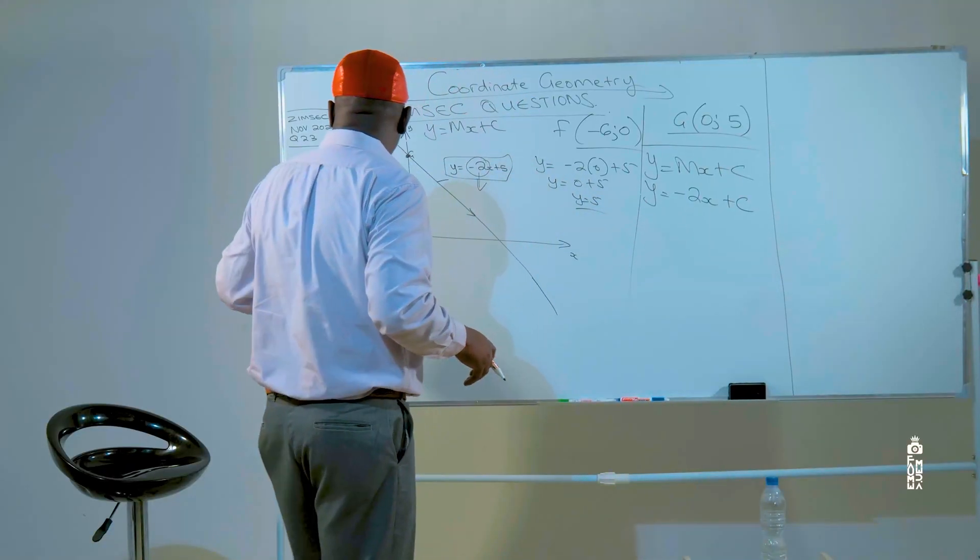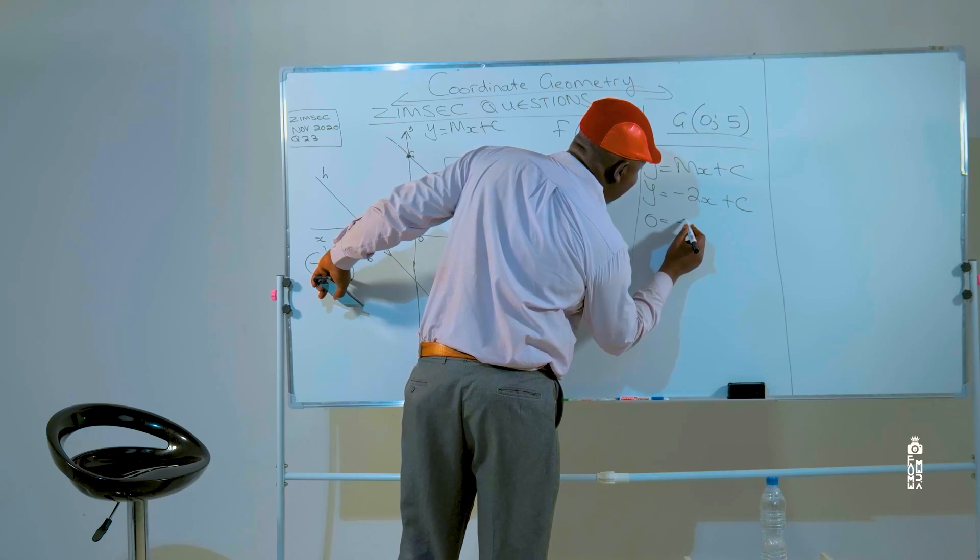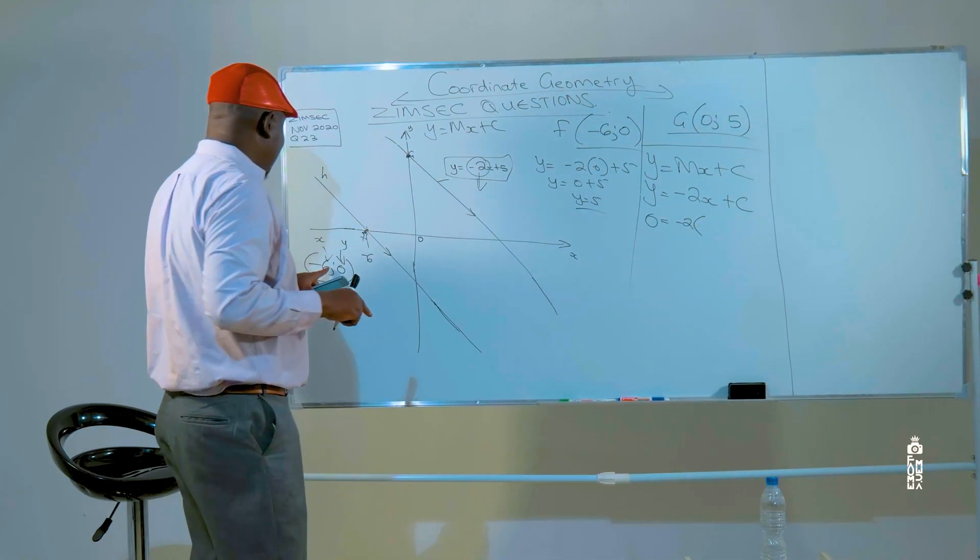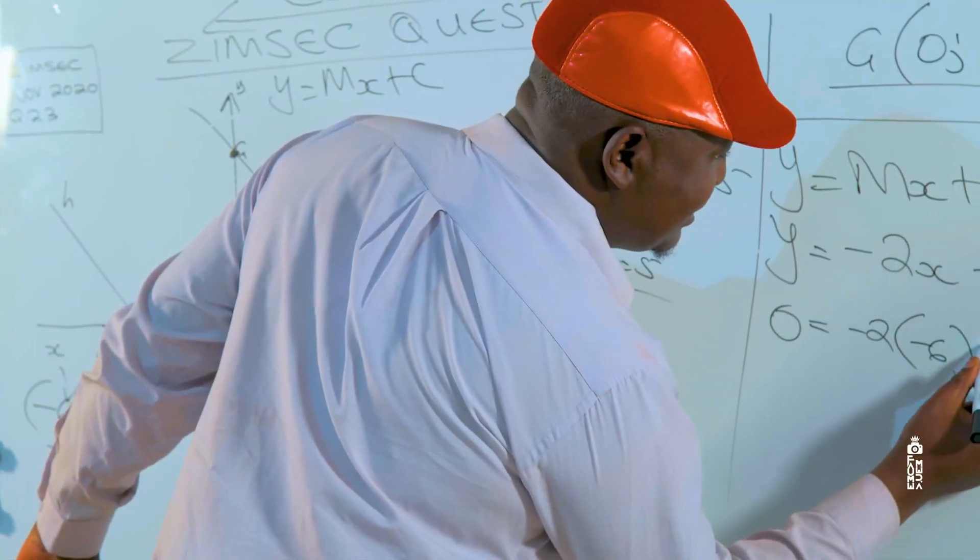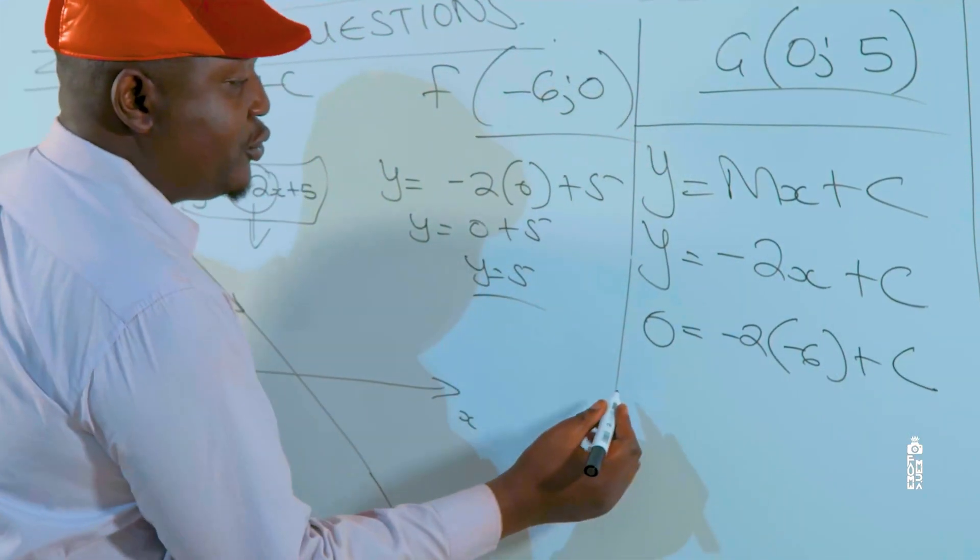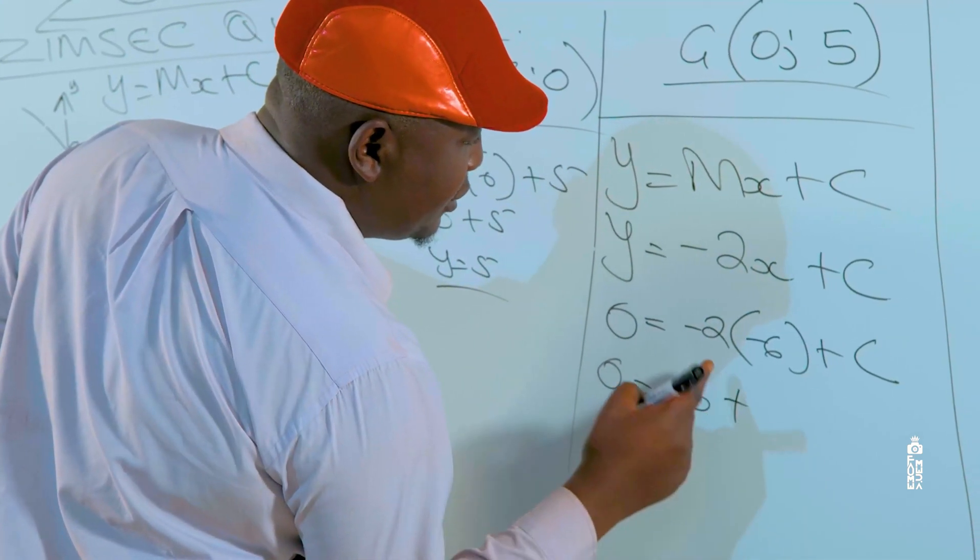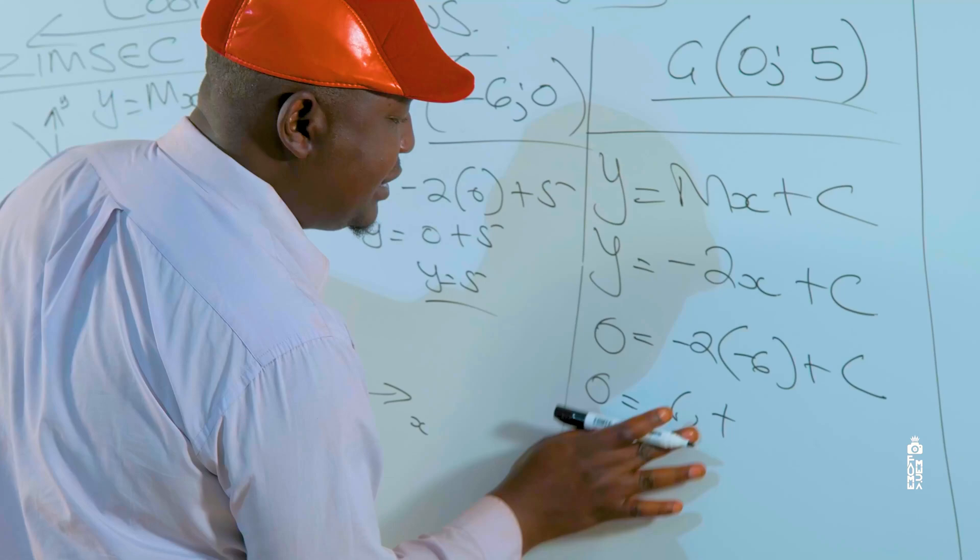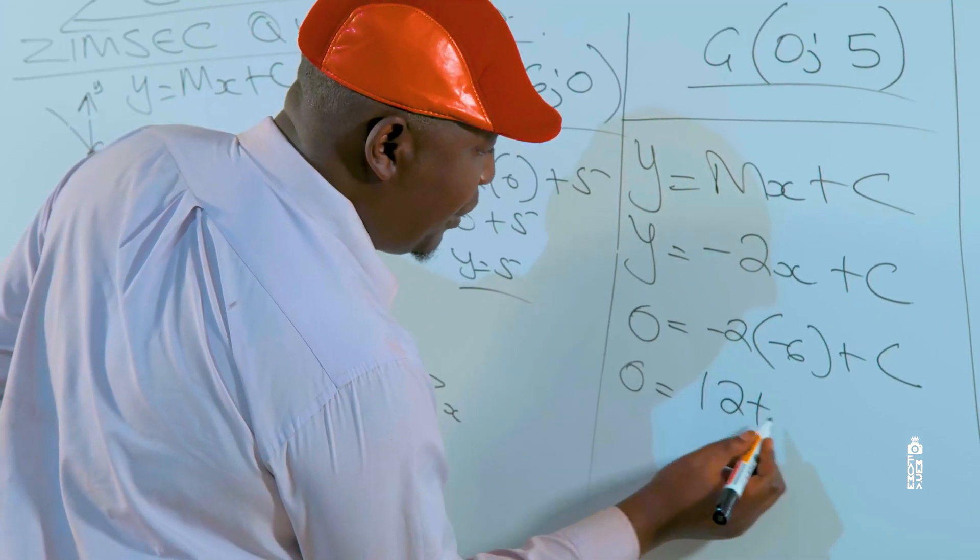The next task that we have at hand is what is the value of c. So we are going to use this coordinate. We are going to substitute these coordinates into our general y equals minus 2x plus c. So, at y, we write 0 is equal to minus 2 multiplied by, our x coordinate is minus 6, and then plus c. So, 0 is going to be equal to, minus 2 times minus 6 gives us positive 12 plus c.